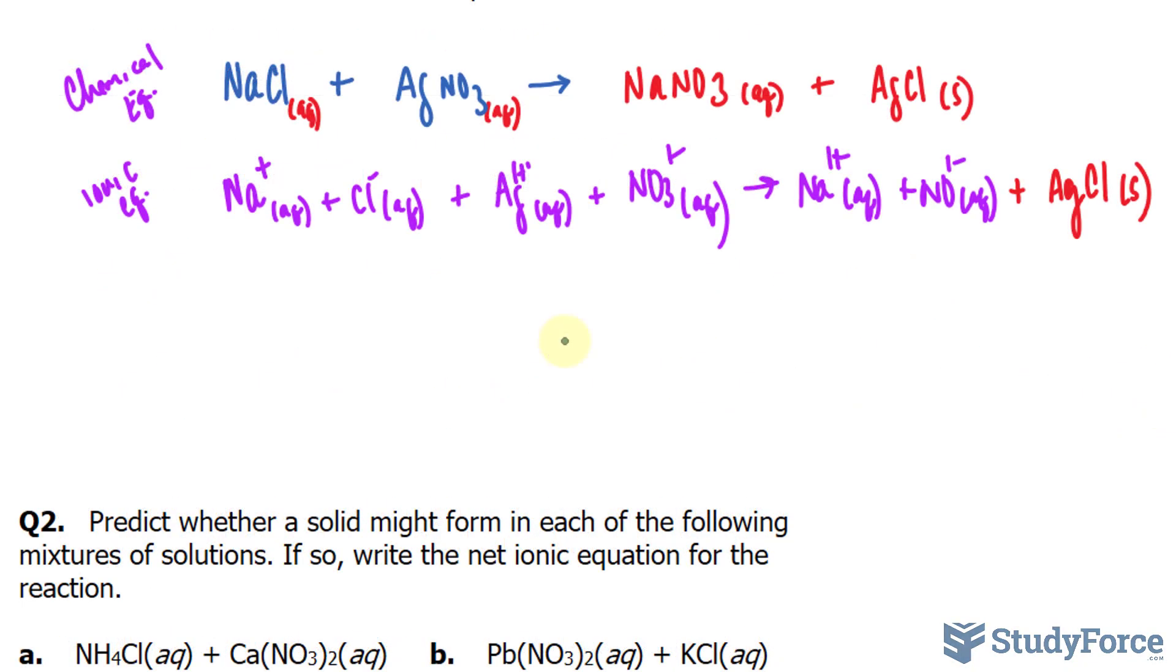Finally, we will write the net ionic equation, and for that we have to remove the spectator ions. Take a look at the left and right sides of this equation and see if there are any commonalities. You'll notice there is sodium on both sides, so we can cancel that out. We can also cancel out the nitrate ion. Those are our spectator ions.